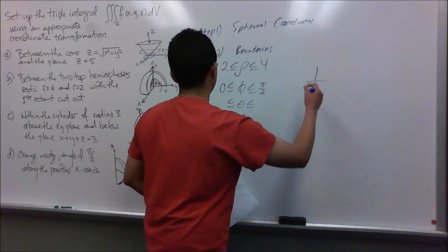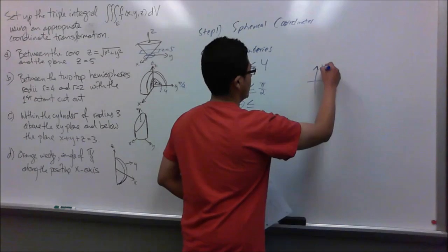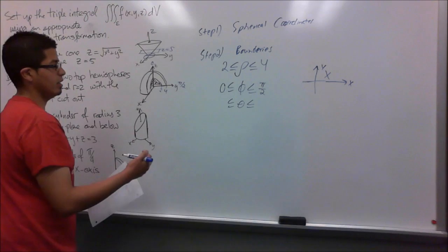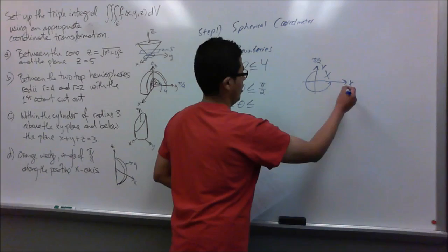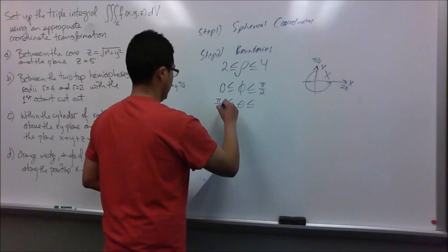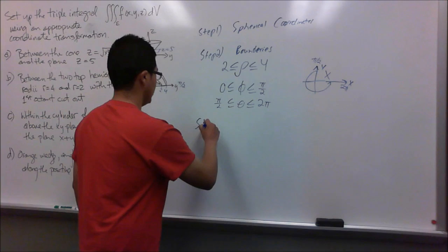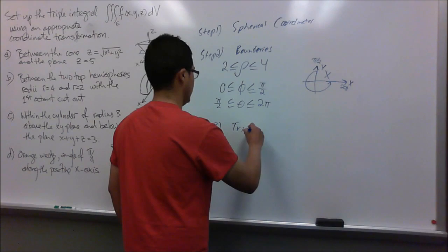For theta, since both hemispheres are on the xy-plane and we cut out — we eliminate the first octant — we start at pi over 2 and go all the way to 2 pi. Those are our limits for this hemisphere. Step 3 is to write the triple integral.